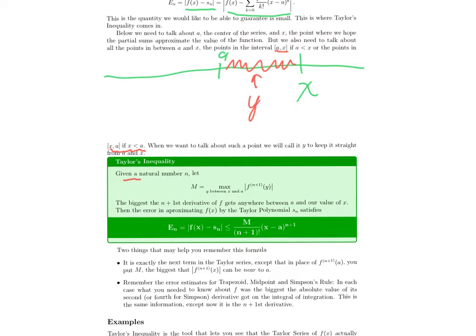So, you pick a number n and then what you have to compute is the biggest that the absolute value of the (n+1)th derivative of f gets on all the points y between x and a. So when you were writing Taylor series, you had to figure out what every nth derivative of f was at a. So here, the extra thing is you got to figure out what the (n+1)th derivative of f is at every point between a and x and then you take the biggest that absolute value gets.